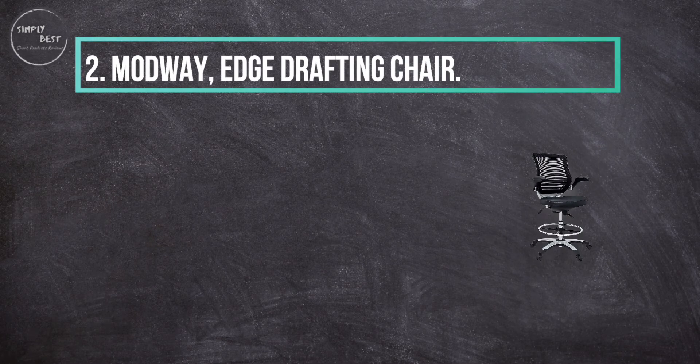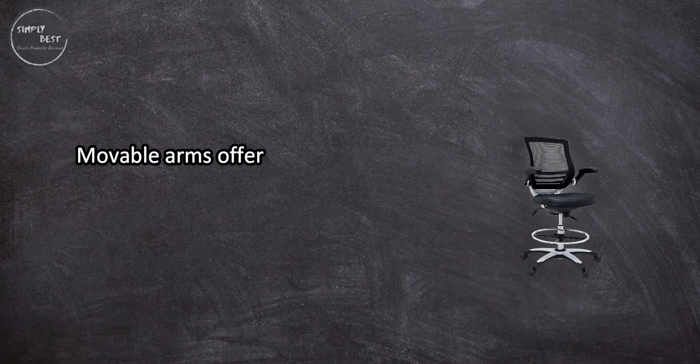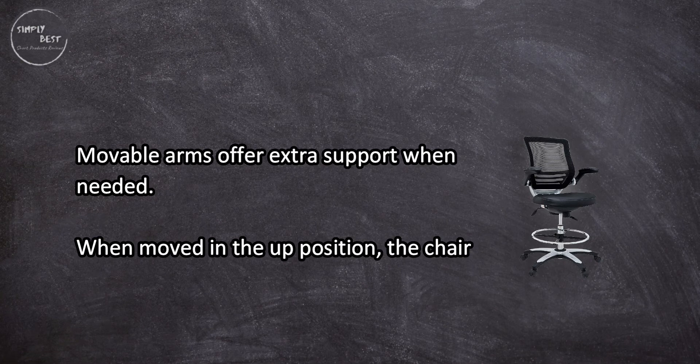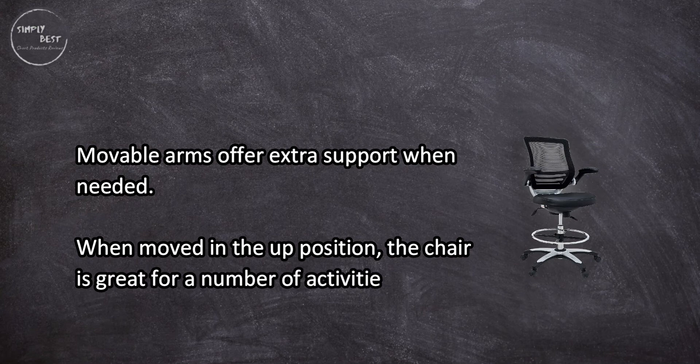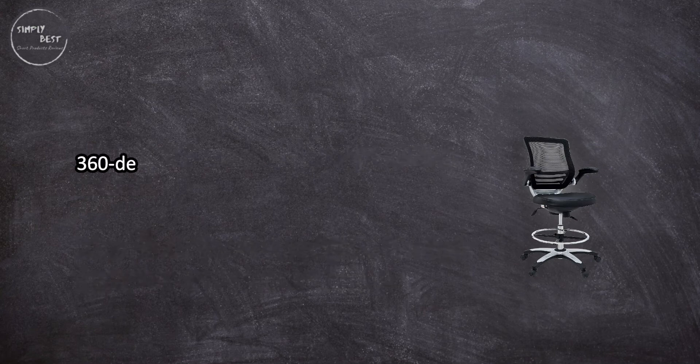At number two, Modway Edge Drafting Chair. Movable arms offer extra support when needed. When moved in the up position, the chair is great for a number of activities. 360-degree swivel and tilt functions.